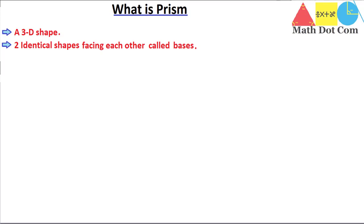Don't get confused about the bases — I will draw the shape and prove that this property must be present in a prism. In a prism there must be two identical shapes that face each other, and those shapes are called bases. The third property is that it must be a polyhedron, meaning all its faces must be flat. If you come across a curved face in a shape, then that shape is not a prism.